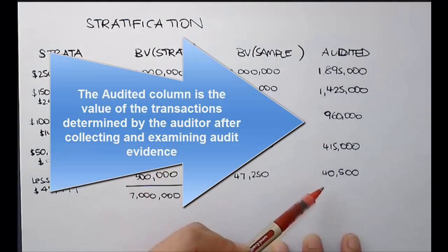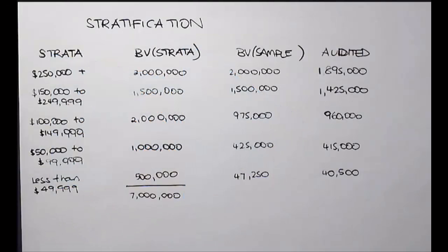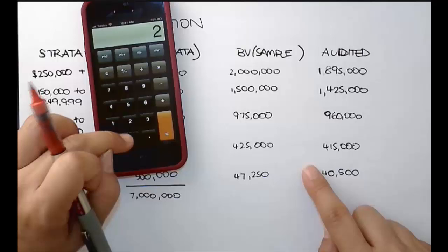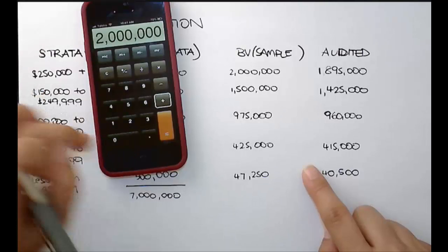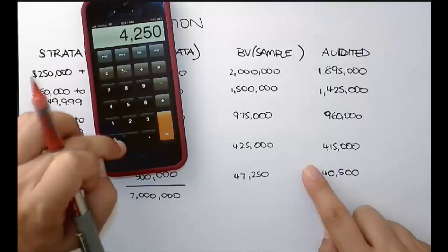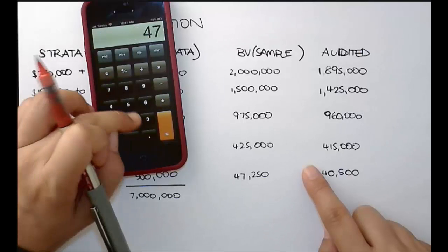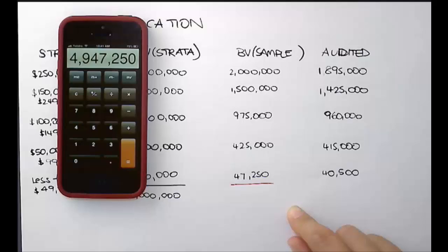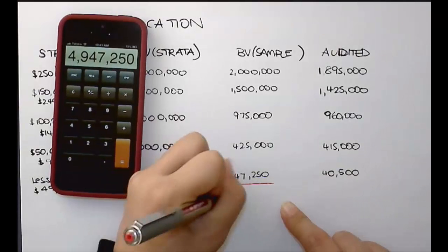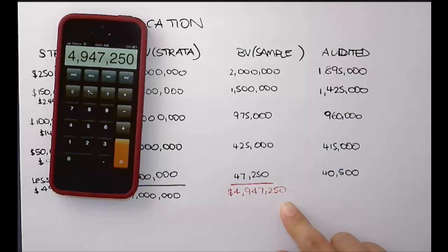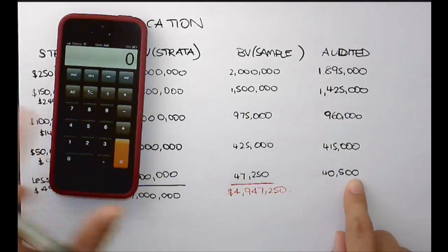How do I project to the population? The simple way would be to add up the book value of my sample: $2 million plus $1.5 million plus $1.5 million plus $975,000 plus $425,000 plus $45,000 plus $47,250 — giving a total sample book value of $4,947,250.